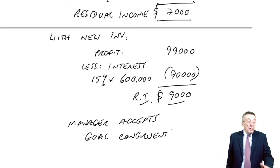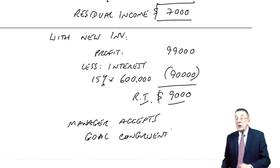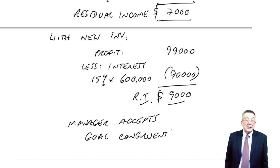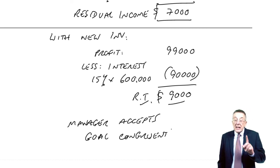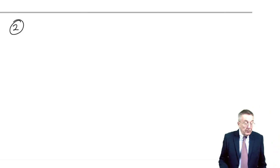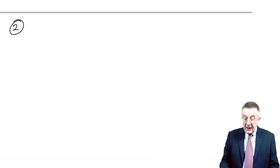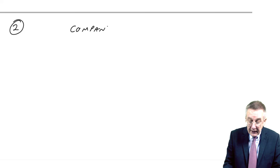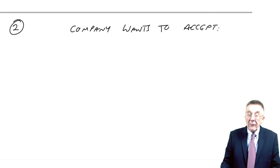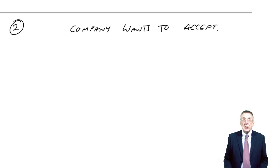So that's what residual income is. For example one, it didn't matter which way we measured — return on investment or residual income — he would have made a goal congruent decision and wanted to accept. But now look at example two. With example two, the new investment was giving 16%, so again the company wants to accept. But when we used return on investment, there was that problem — the company wanted it, the manager doesn't. Lose goal congruence.